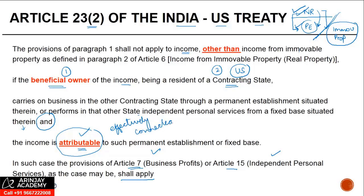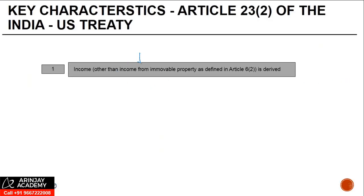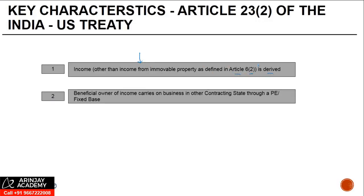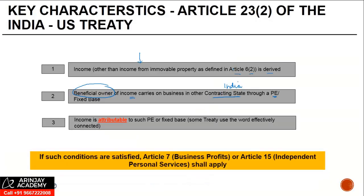Some treaties use 'effectively connected' instead of 'attributable' — these two terms have different meanings and there are several case laws on what they mean, so they should be applied accordingly. To summarize Article 23(2): income other than income from immovable property as defined in Article 6(2) is derived by the beneficial owner, who carries on business in the other contracting state through a PE, and the income is attributable to that PE. If all these conditions are satisfied, this income will not be taxed under Article 21 but will be taxed under Article 7 or Article 15, as the case may be.